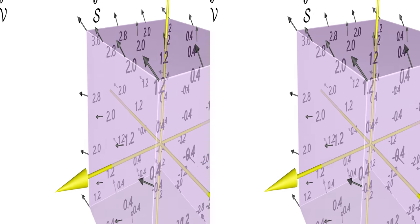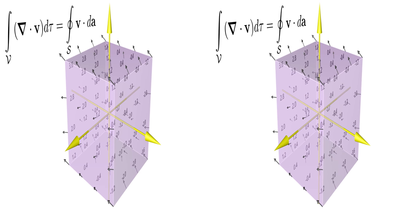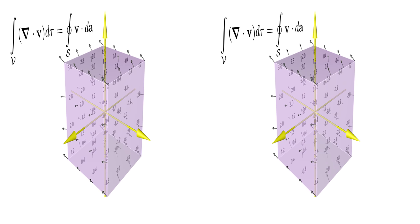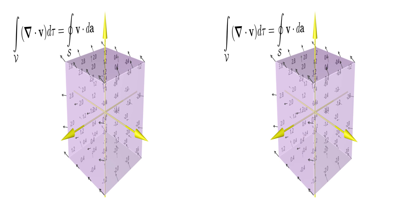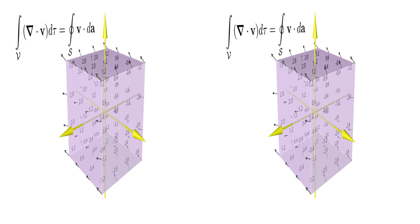In other words, the volume integral of the divergence of a vector field is equal to the surface integral of the vector field through the boundary of this volume. This is called the divergence theorem.